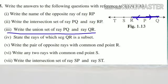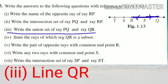Next, third: write the union set of ray PQ and ray QR. Union means combined or joined. So if you join ray PQ and ray QR, then you get line QR. Your answer is line QR.